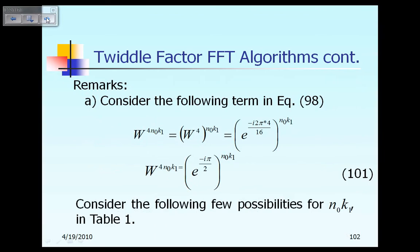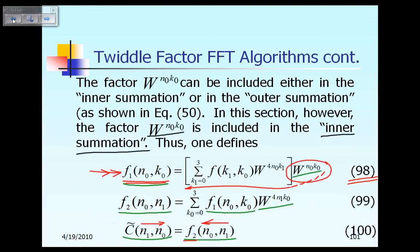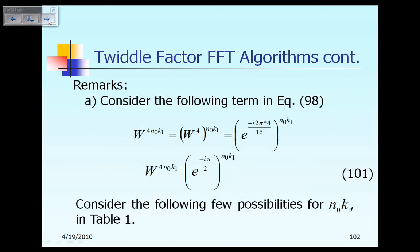If you look at equation 98, you will see that you have a term like W raised to the power 4n0k1. Let's try to see what that term is equal to. W raised to the power 4n0k1 — the power of W is 4 times n0k1, which is the same thing as shown here.